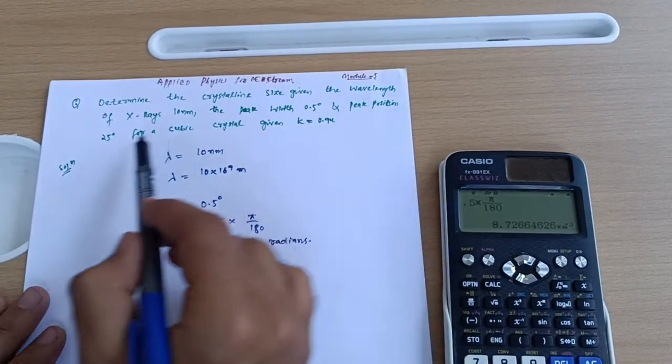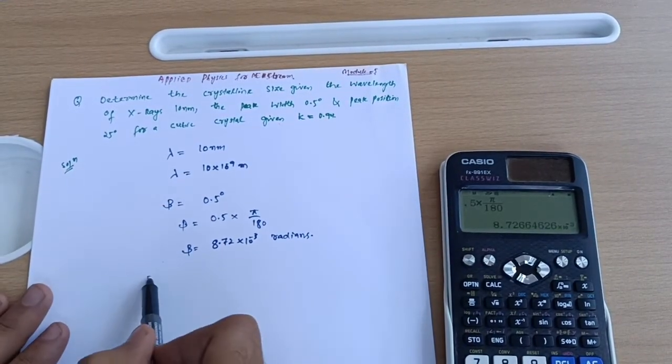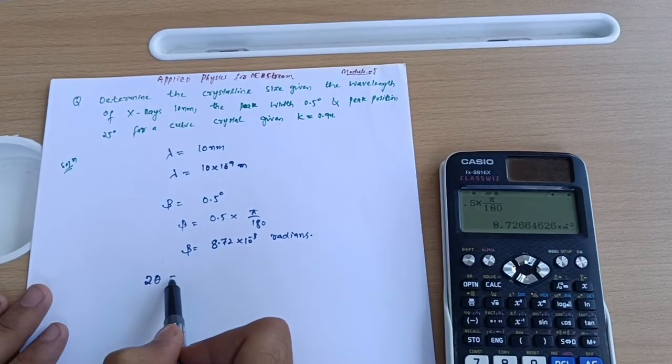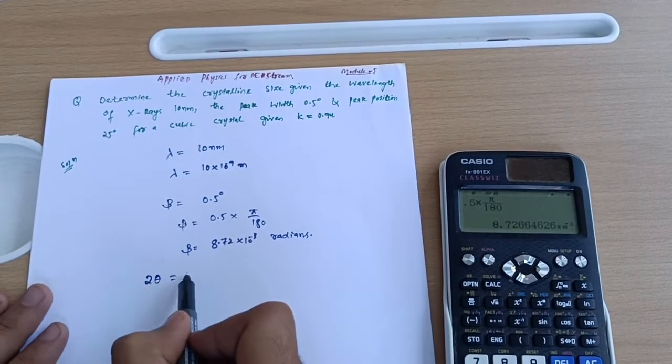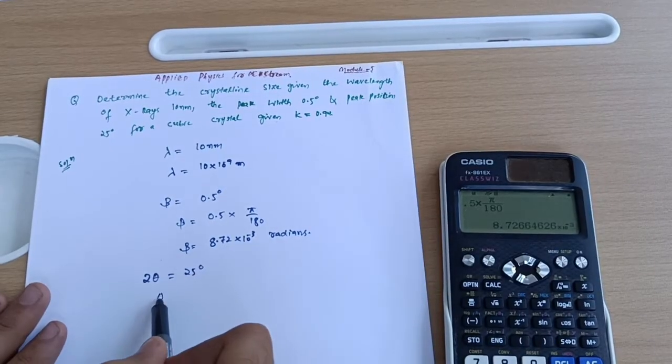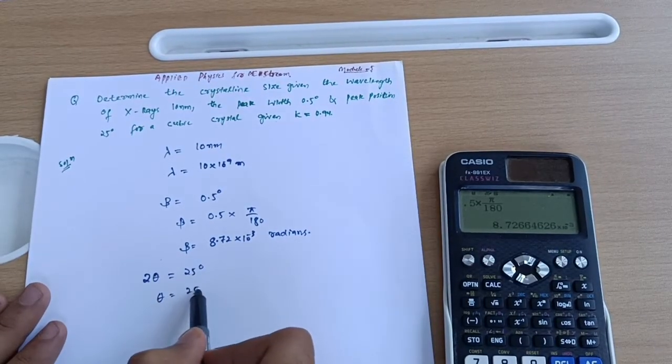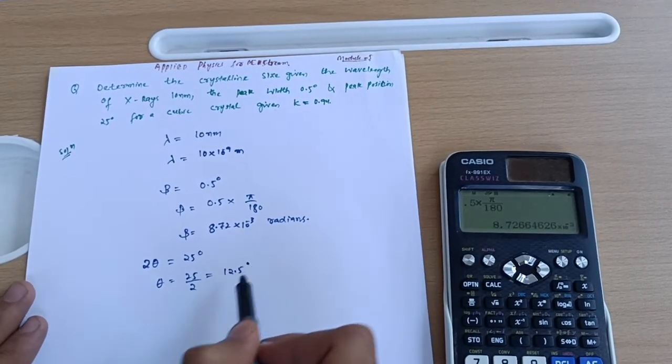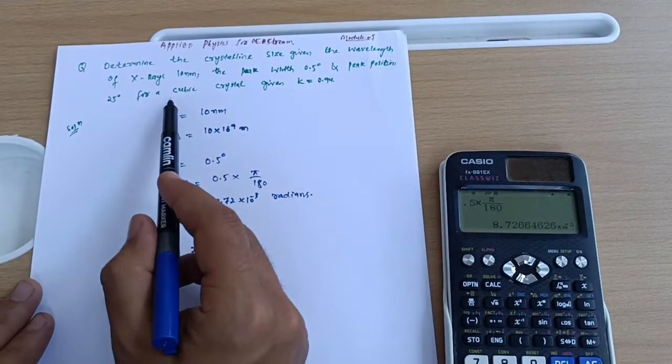You have to remember these terminologies. 2θ = 25° means θ = 25/2 = 12.5°. This is your theta in terms of degrees.